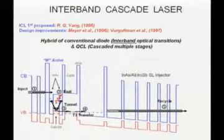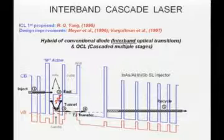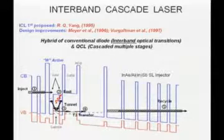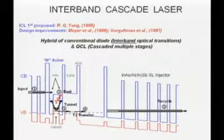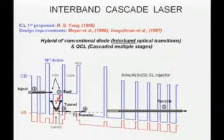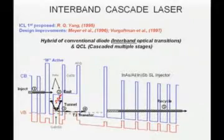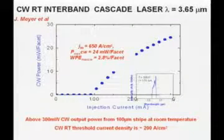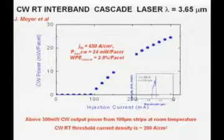The interband cascade laser is an interesting concept — it's not a unipolar laser, there are electrons and holes, but it uses the cascading process. This has been pioneered by a number of people, including Jerry Meyer and others. The idea is, using band engineering, you can have the electrons tunnel into this so-called W-shaped active region, where the electron can recombine with an actual hole and emit a photon, but then tunnel out into the next stage. So you can have recombination and still cascading. These results are certainly very interesting — CW at room temperature, 20 to 30 milliwatts of power at 3.65 micron wavelength.